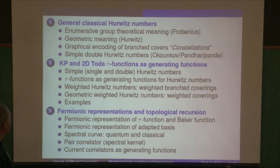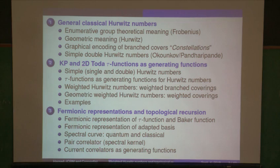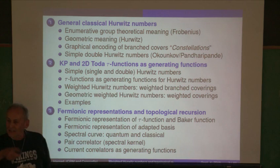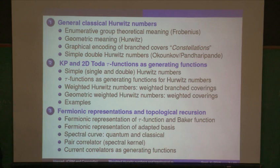The second part gives a review of how you construct tau functions that are generating functions for these weighted Hurwitz numbers, and the third part gives a fermionic representation for all these, which is a good starting point for the list of ingredients that go into topological recursion. I see topological recursion — with all due apologies to the authors — as a cuisine, a recipe, which requires certain ingredients to be satisfied, and then you get topological recursion.